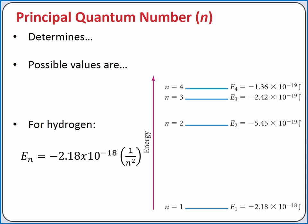For the hydrogen atom, we can calculate the energy of each orbital based on the equation energy equals negative 2.18 times 10 to the negative 18th power times the quantity 1 divided by n squared. With multi-electron atoms, the calculation becomes more complicated.